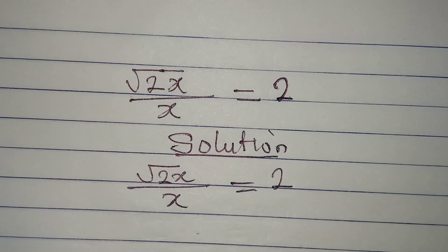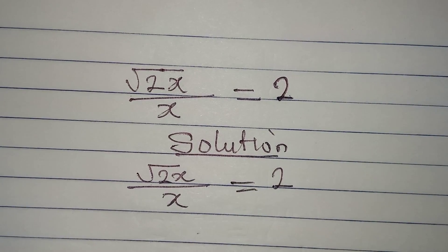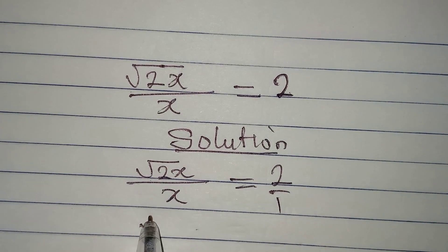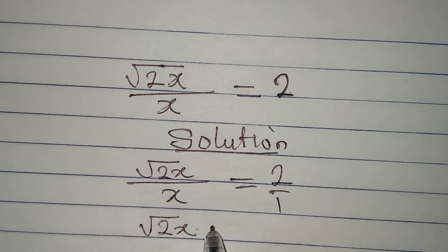Remember this is over 1, so we can just cross multiply so that square root of 2x will give us 2x.